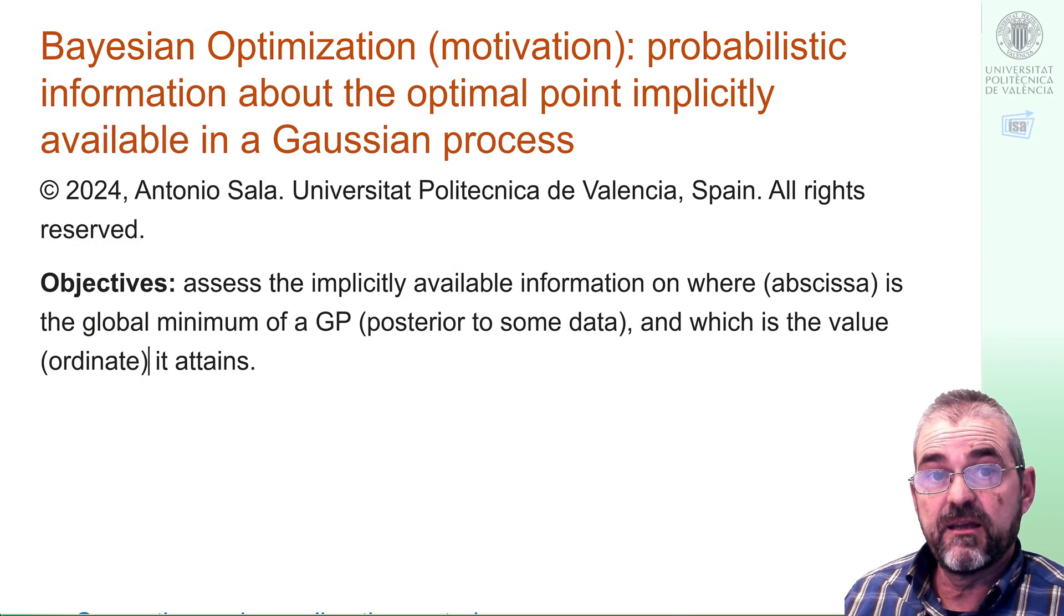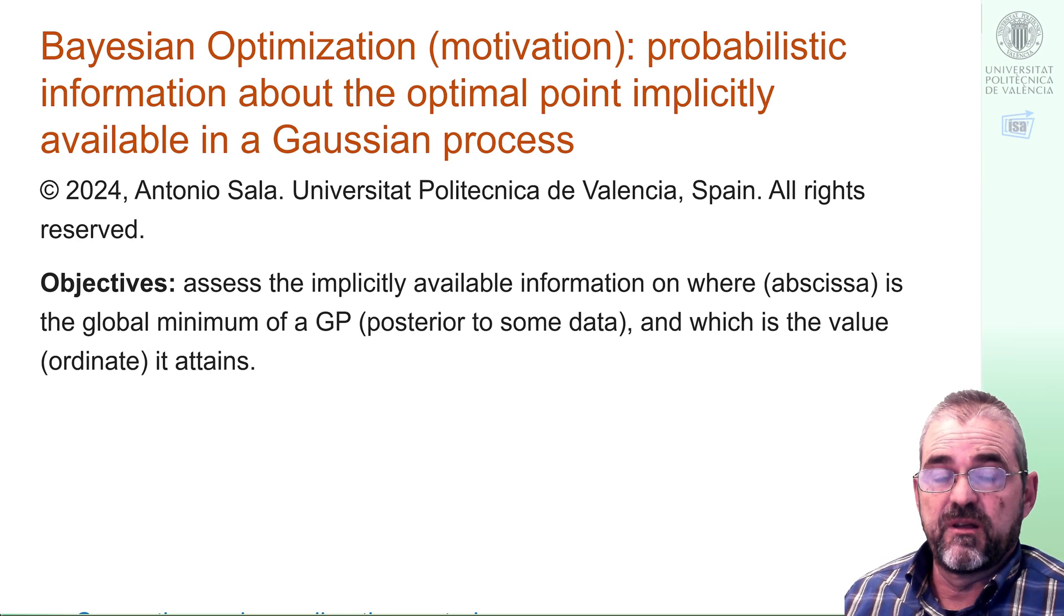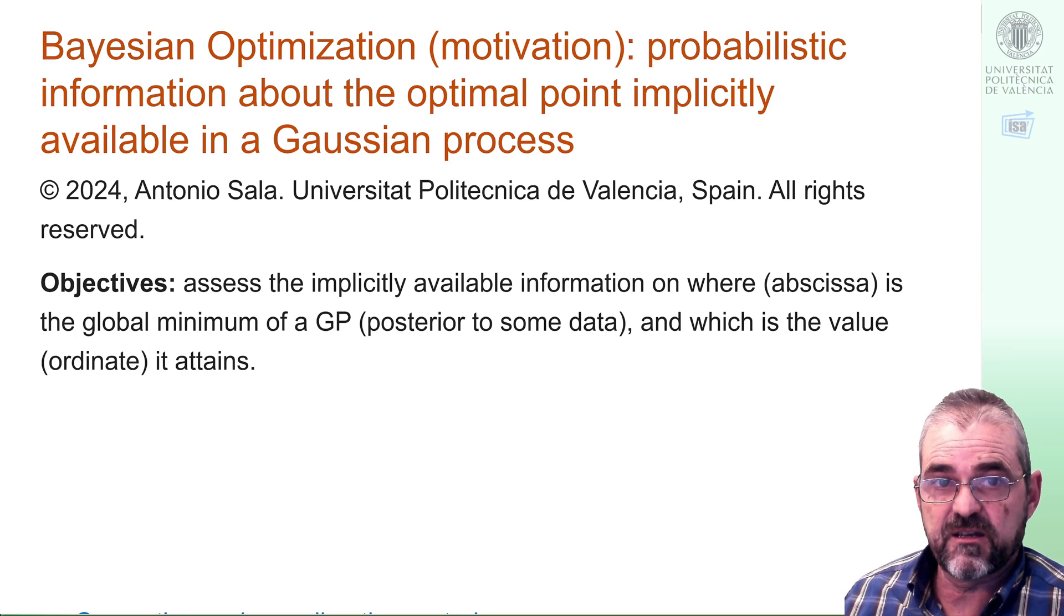Hi, I'm Antonio Selle, and in this video we are going to illustrate as a motivational example to Bayesian optimization the implicitly available information on where the global minimum is in a Gaussian process. And we'll quickly review basic formulas and code to carry out such exercise.